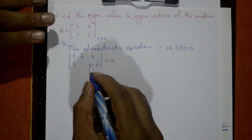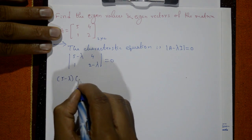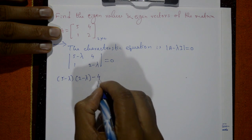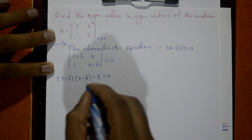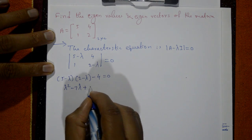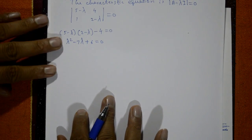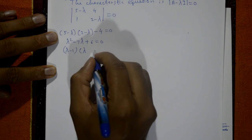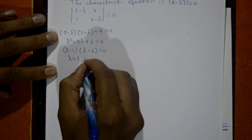Expanding: (5−λ)(2−λ) − 4 = 0. Opening the bracket we get λ² − 7λ + 6 = 0. Factorizing this gives (λ−1)(λ−6) = 0, so λ = 1 and λ = 6.